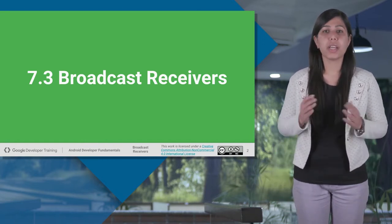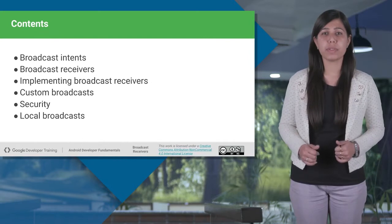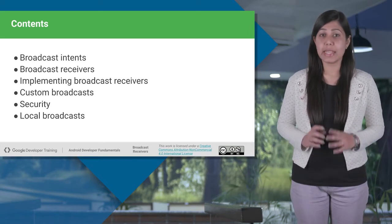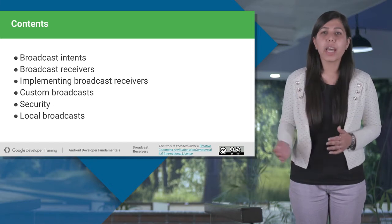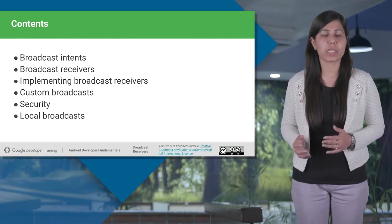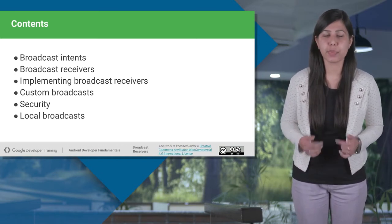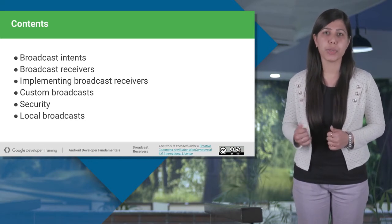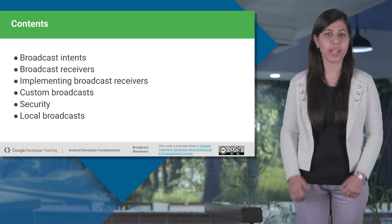For this we have broadcast receivers, which you will understand in a few minutes. This whole mechanism involves the implementation of broadcast intents and broadcast receivers together. In this session we will learn about how broadcast intents broadcast system-wide messages to other components, how broadcast receivers listen for specific broadcast intents, and we will also learn how to create custom broadcasts. We'll also discuss security concerns and how to get over them using local broadcast, which allows you to send broadcasts within your app instead of system-wide.